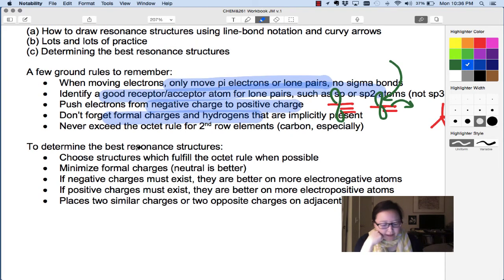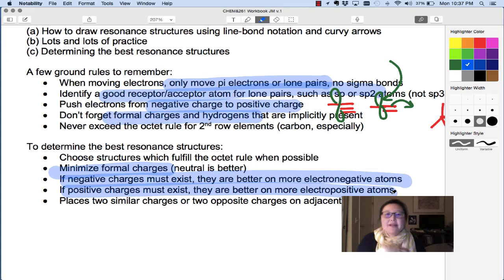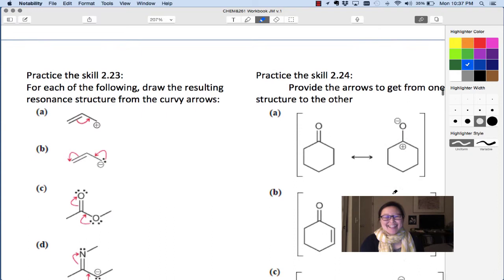Determine the best resonance structure by minimizing your formal charges. We're always going to assume neutral is better or neutral is best, so we'll practice with that. And then if you have to have charges, you want to try to get the negative charges on the more electronegative atoms and the positive charges on the more electropositive atoms. So that means if your molecule has to have a negative charge just because the whole thing is charged negative, put the negative charge on oxygen over carbon because oxygen is more electronegative, it can handle the negative charge better.